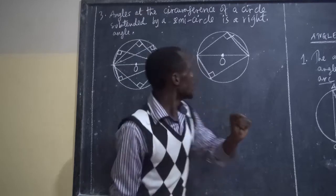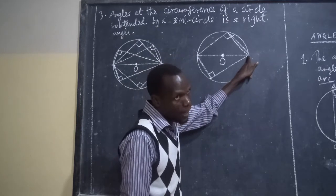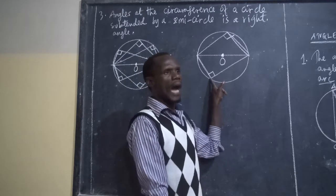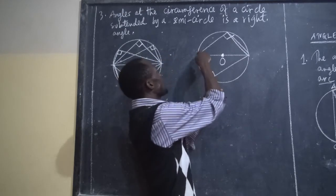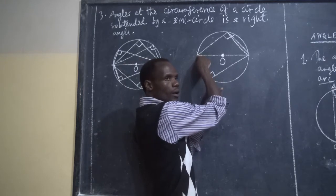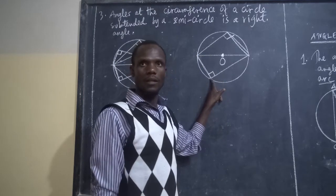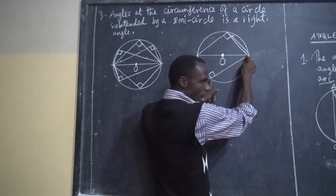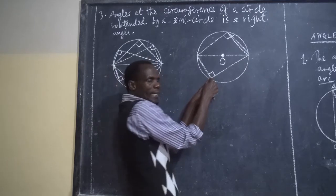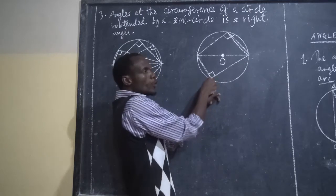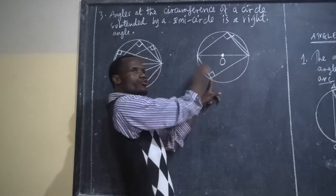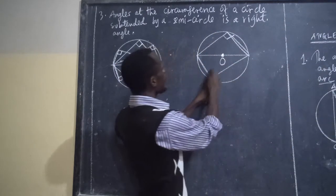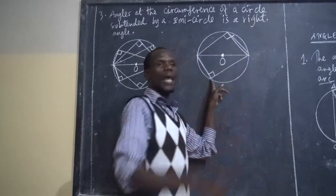So what does this mean in context? If you draw a line from one side of the diameter — of the chord — and it touches the circumference, then from that point on the circumference you draw a straight line to the other end of the diameter, the angle formed is 90 degrees, and that is called a right angle.